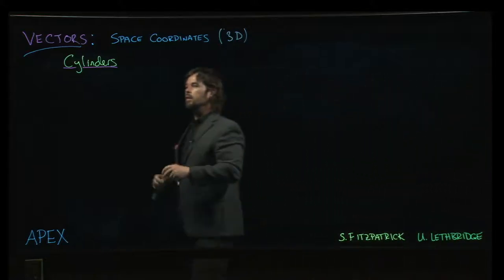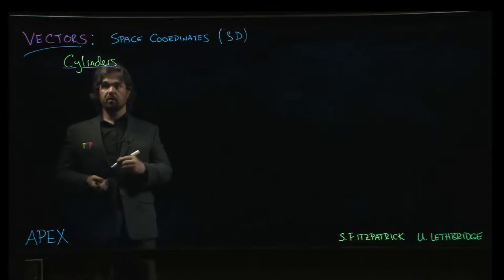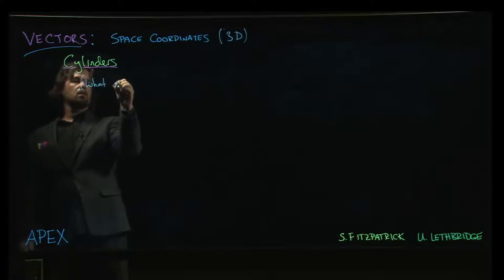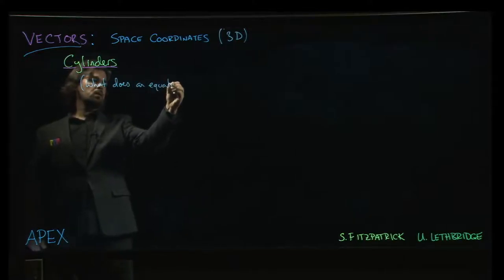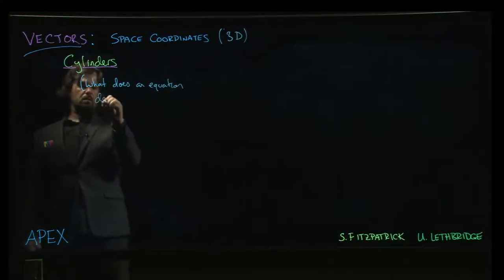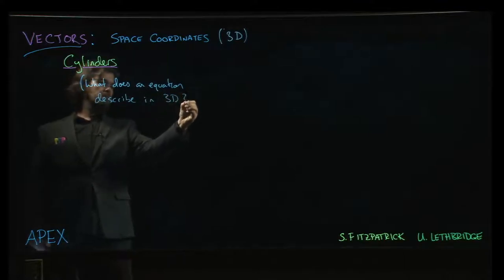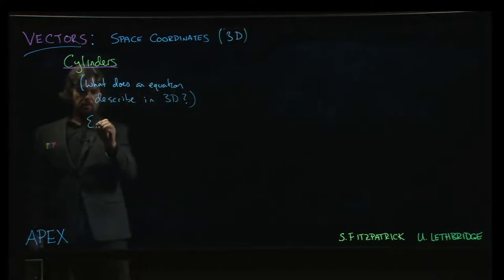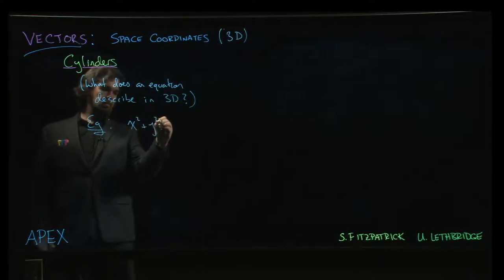The next object we're going to look at are called cylinders. So the question here to think about is, what does an equation describe when we're in space, in three dimensions? And just as an example, think of an equation like x-squared plus y-squared equals 4.